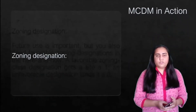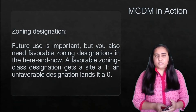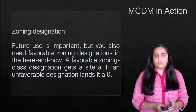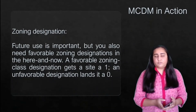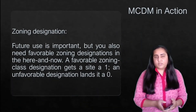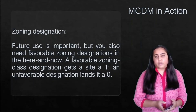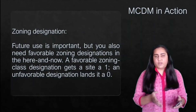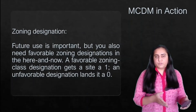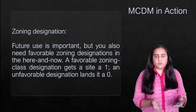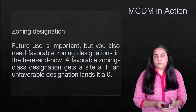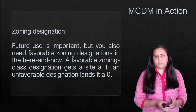The next criterion is zoning designation. Future use is important, but you also need favorable zoning designations in the here and now. If a site has a favorable zoning class designation, it gets a one; if not, it gets a zero.